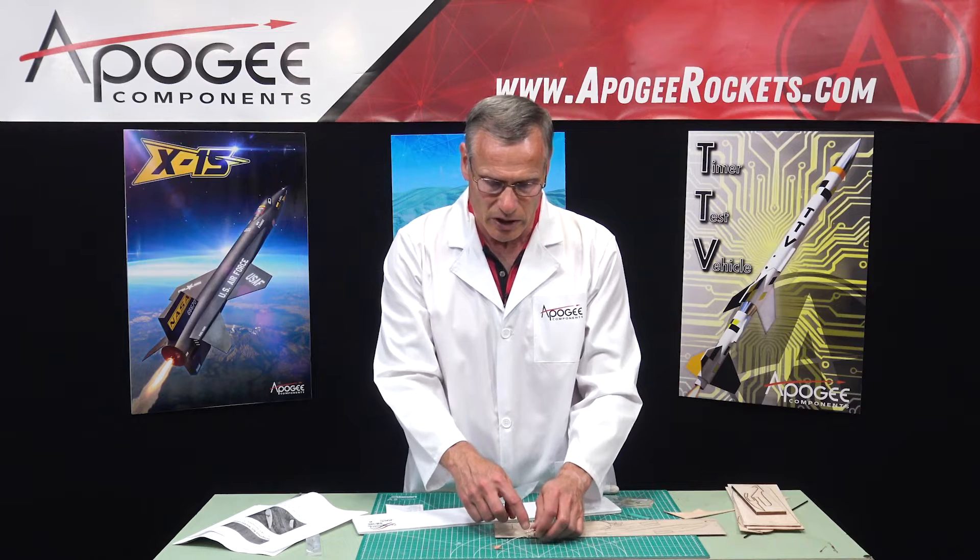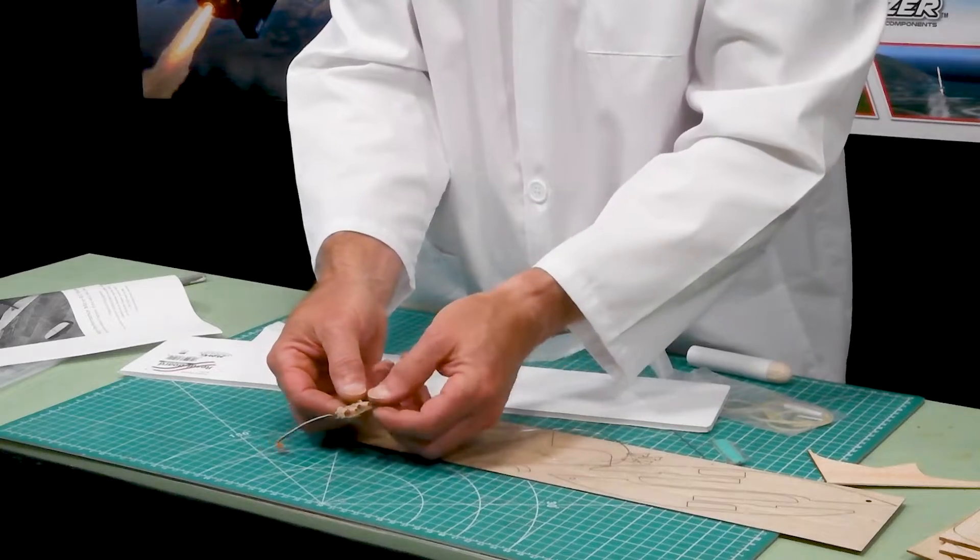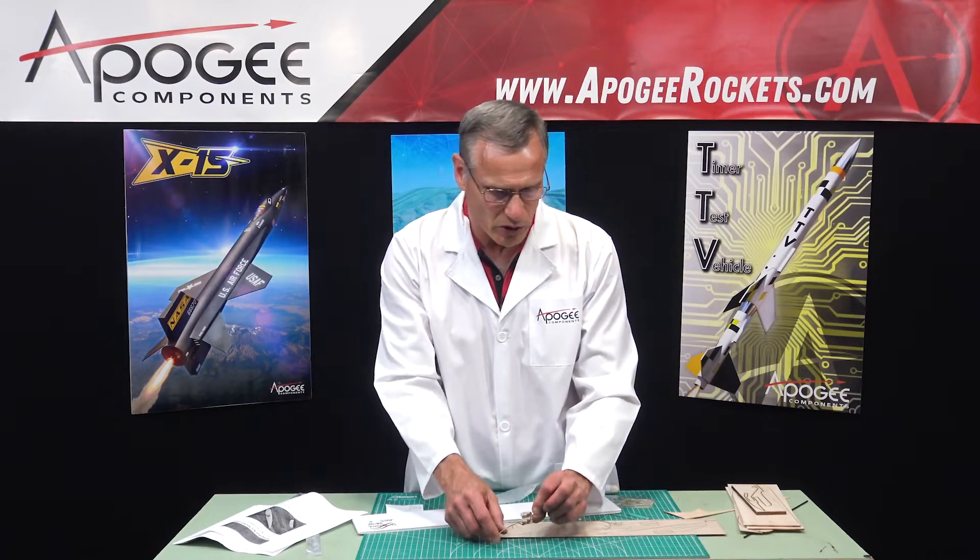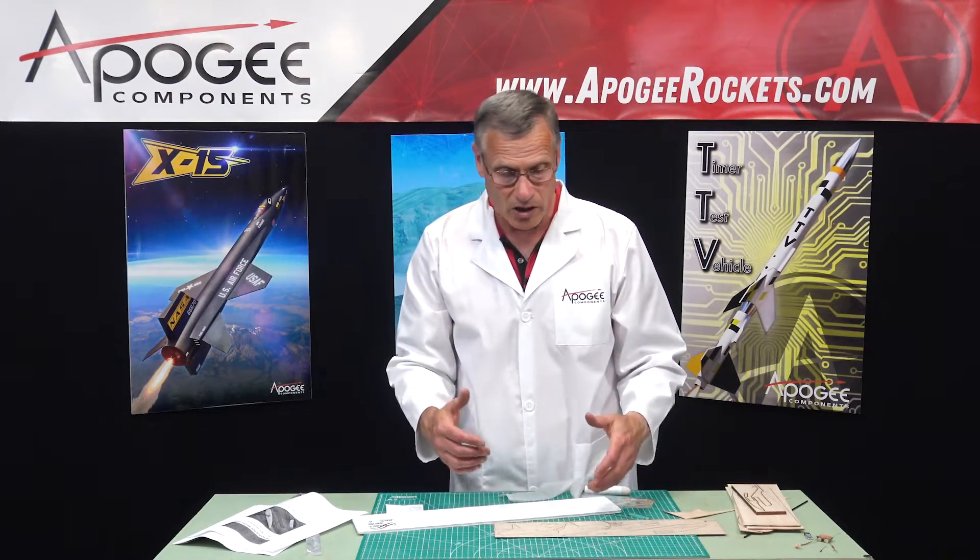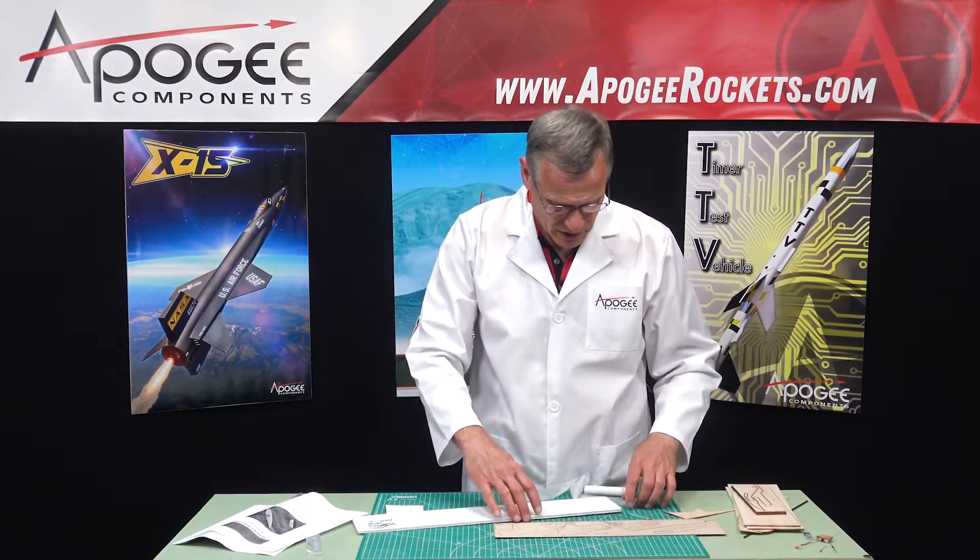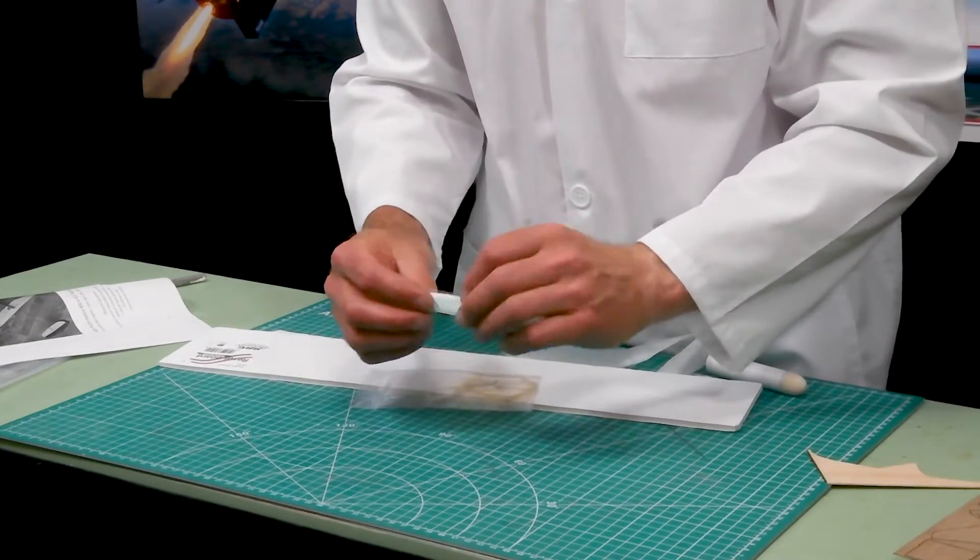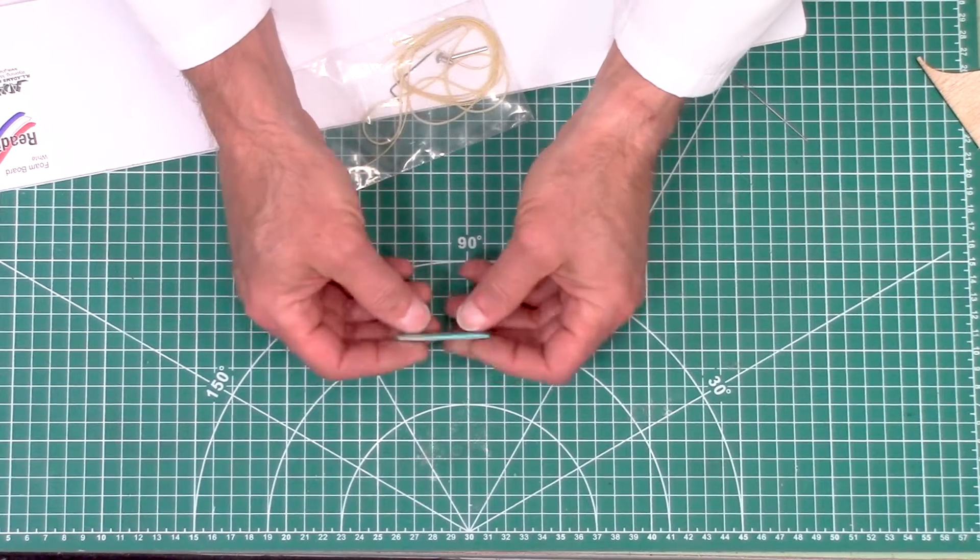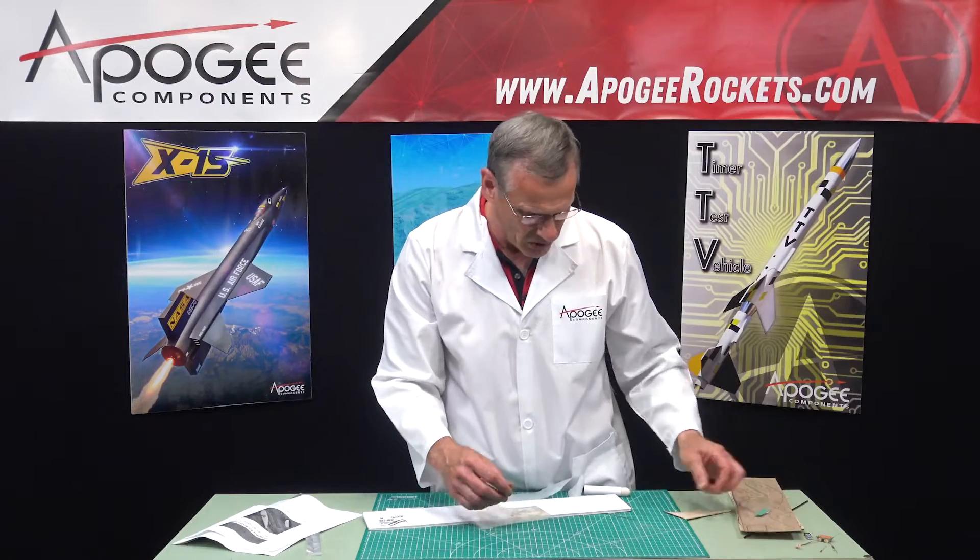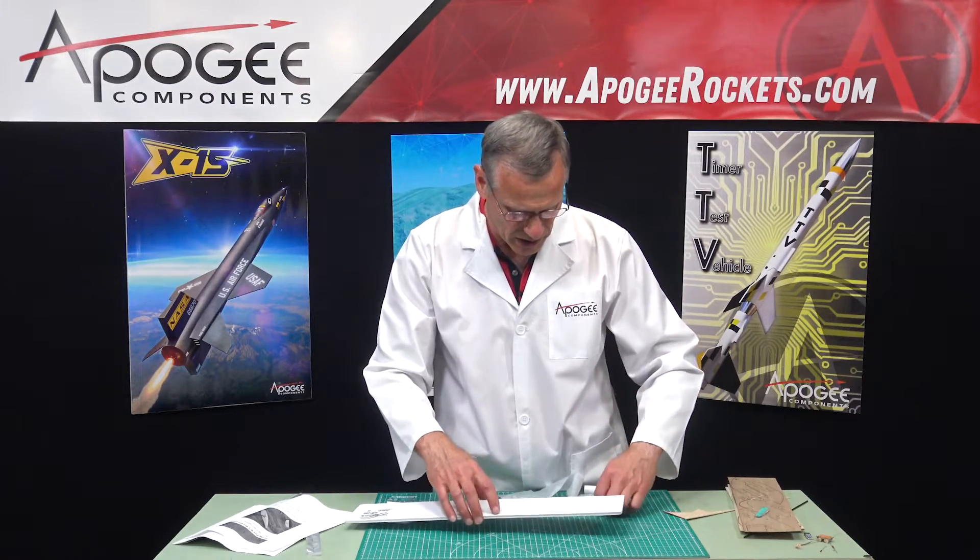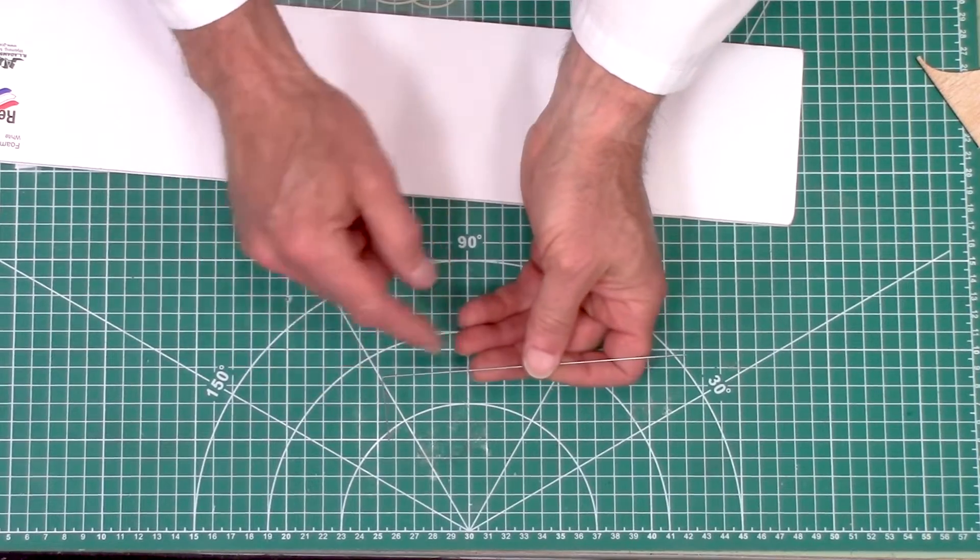But you do need also an RC transmitter that will talk to this. This is a 2.4 gigahertz, standard RC equipment. So you're going to need that, a transmitter in order to build this thing. So let's see what else we got in here. This is some clay and that's going to be used for balancing it. And I like how he packages that, keeps it all nice and the clay doesn't melt everywhere.